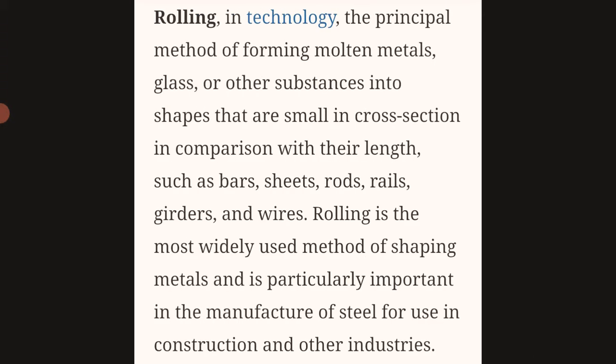Now let's look at the theoretical definition. Rolling is basically a mechanical technology — a principal method by which we convert metals, glass, and other substances into shapes where the cross-sectional area, or thickness, is very small.